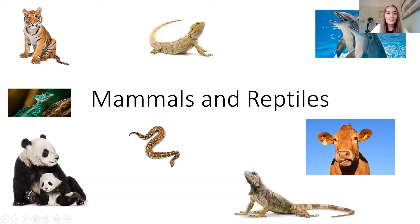Right, so we have got a tiger which is a mammal, a panda which is a mammal, a cow which is a mammal and our dolphins are also mammals, which you might seem a little bit strange. But if you watch the video, it talks about how some of our marine animals, animals that live in the water, actually have hair and they still breathe air, they don't breathe underwater. We also have a bearded dragon and an iguana and some other lizards and a snake and they are all reptiles.